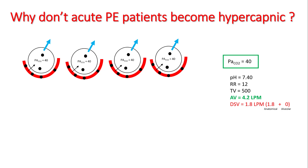We have a normal patient here, with black dots representing CO2 and blue representing ventilation. We have a normal PaCO2 of 40, pH of 7.4, and this person is breathing at a normal rate of 12 with a tidal volume of 500 cc's. Alveolar ventilation is 4.2 liters per minute and dead space ventilation is 1.8 liters per minute.